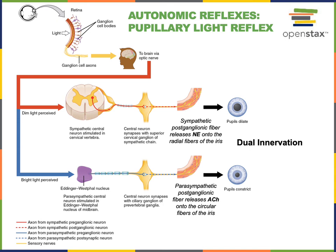In contrast to somatic reflexes, autonomic reflexes have smooth muscles, the heart, or glands as the effector organs. The efferent pathways for autonomic reflexes involve preganglionic fibers — the axons of preganglionic motor neurons extending from the central nervous system to a ganglia of the peripheral nervous system — where they form synapses with postganglionic neurons. Then the postganglionic fibers are axons extending from those ganglia to form synapses with the effector organs.